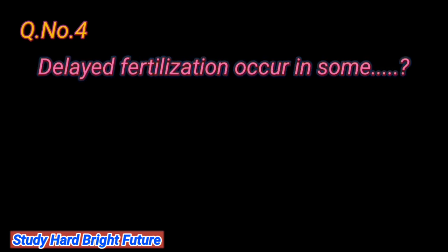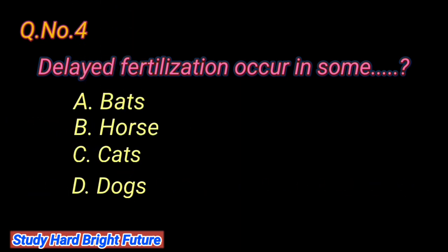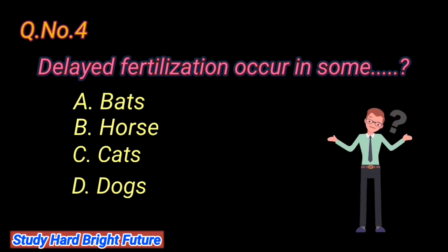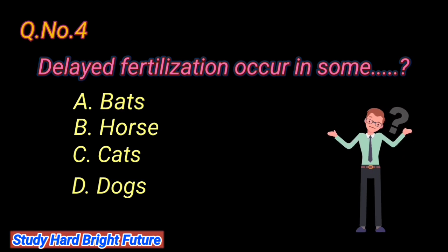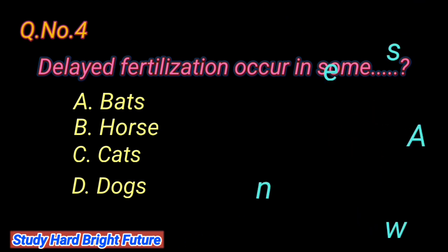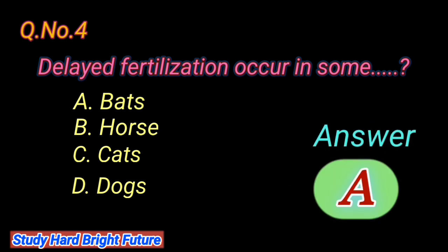Question number 4: Delayed fertilization occurs in some. A. Bats, B. Horse, C. Cats, D. Dogs. The right answer is A. Bats.